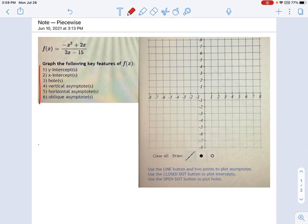We're going to draw all the key features: y-intercepts, x-intercepts, holes, all the asymptotes. Hopefully by the time all these key features are on the graph, you should be able to see how you connect the dots.